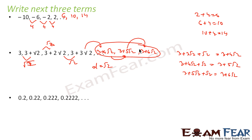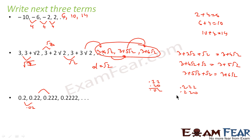Let us take another example: 0.2, 0.22, 0.222. The difference between 0.22 and 0.20 is 0.02. But the difference between 0.222 and 0.220 is 0.002. The difference is not constant, so we can say this is not an AP.